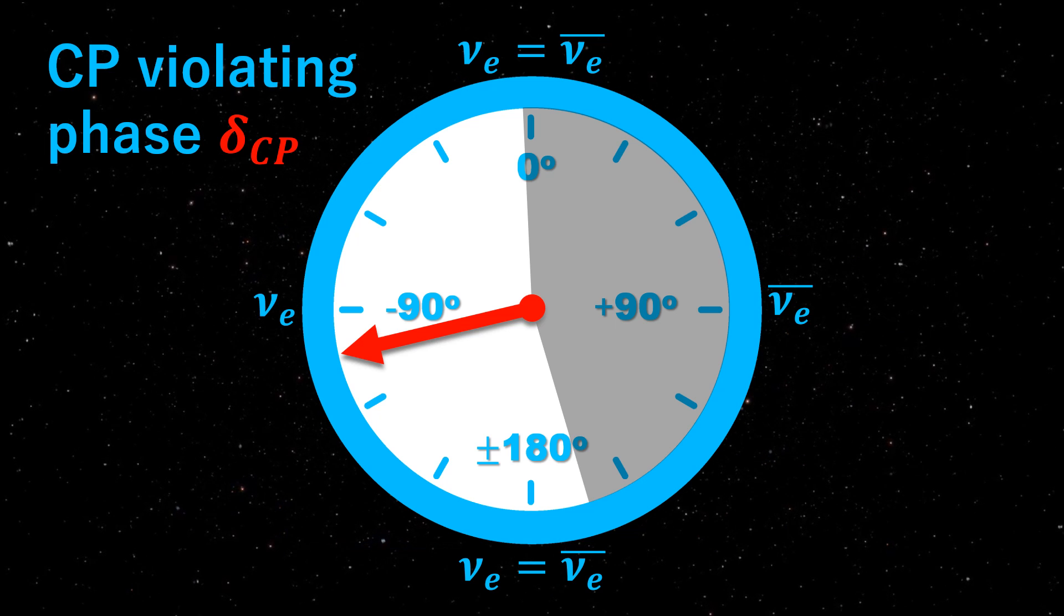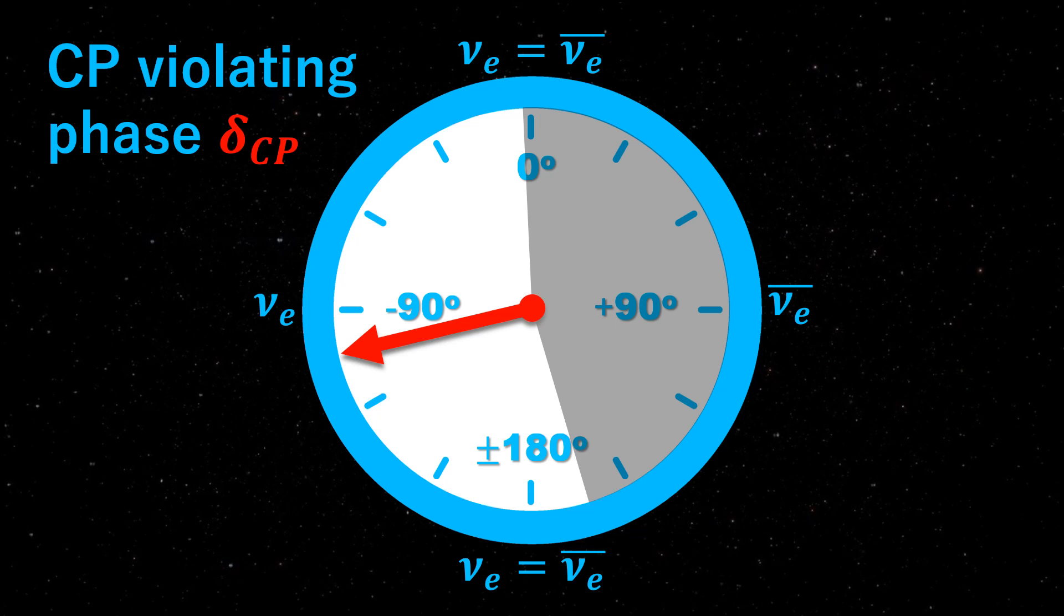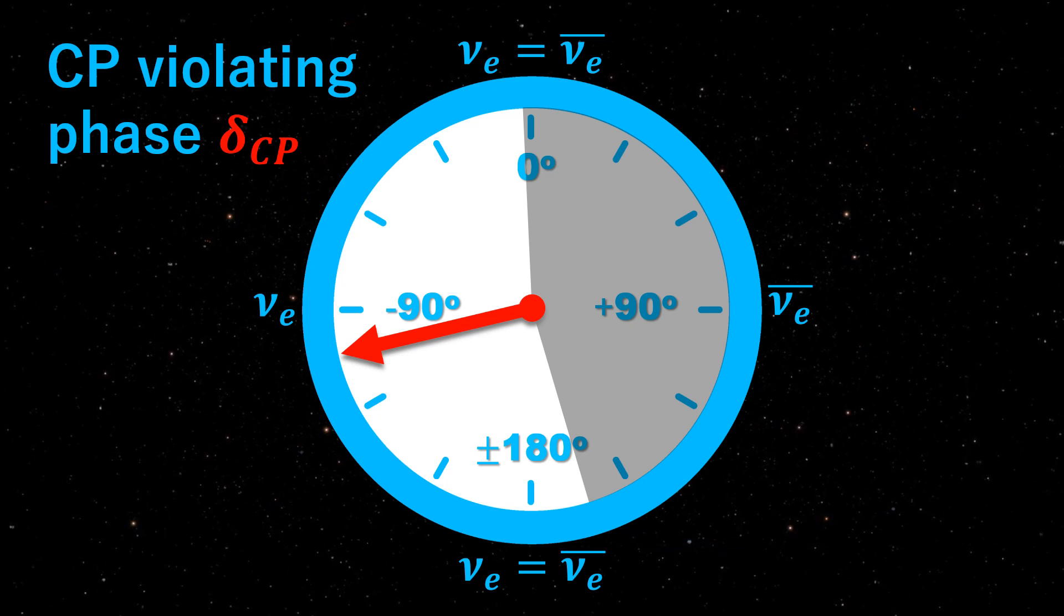For 75% of the delta space, HK expects to discover non-zero CP violation with 3 sigma significance.